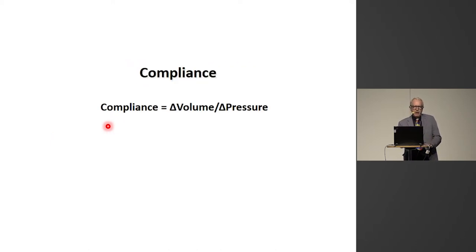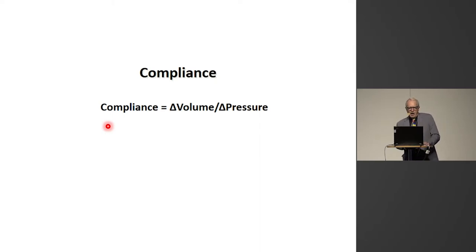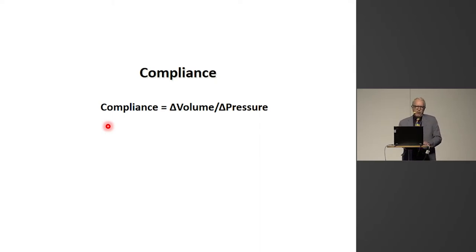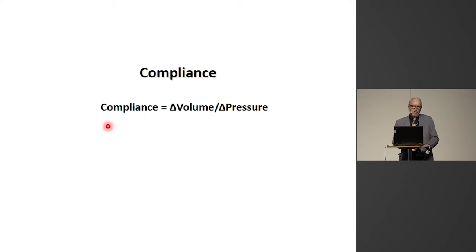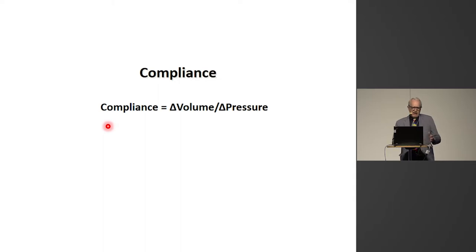Compliance is determined as the change in volume divided by the change in pressure. Normally we take the tidal volume and divide it by the airway driving pressure to get the respiratory system compliance.